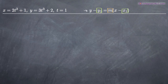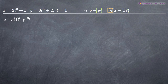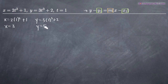In order to find x1, y1, all we need to do is plug t into our equations for x and y. If we plug 1 in for t into the equation for x, we get x equals 2 times 1 squared plus 1, and we find that x equals 3. Plugging 1 in for t into our equation for y gives y equals 3 times 1 cubed plus 2, so y equals 5. Our coordinate point is (3, 5), and we can plug that in for x1, y1.